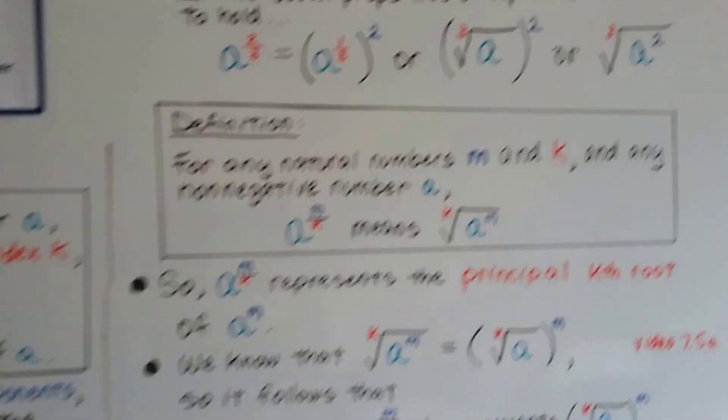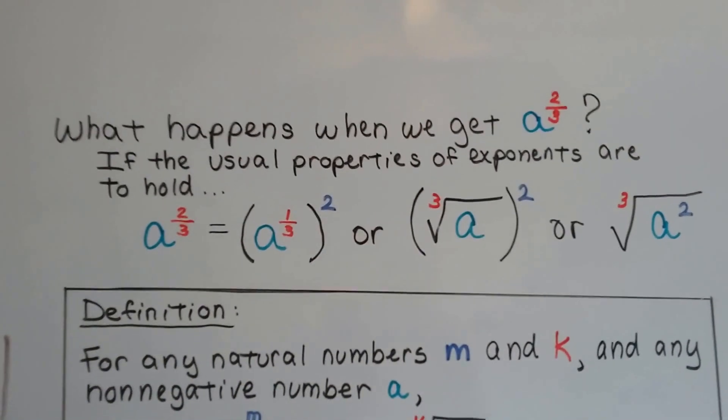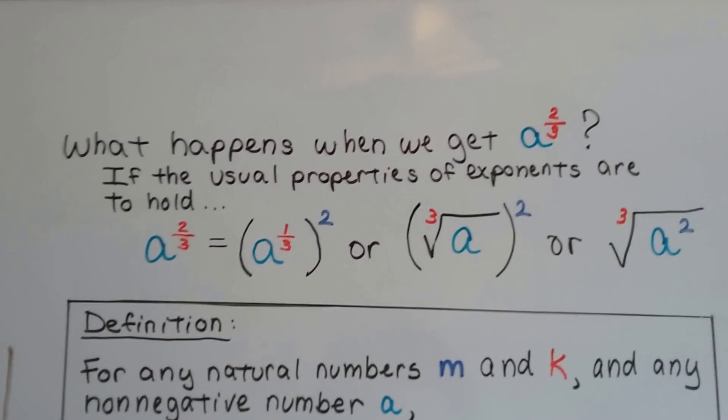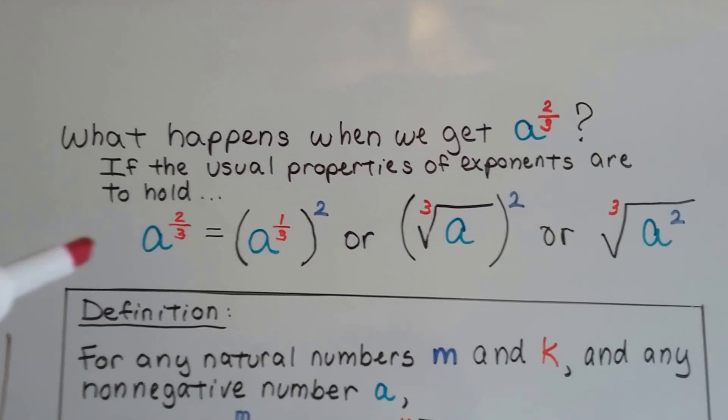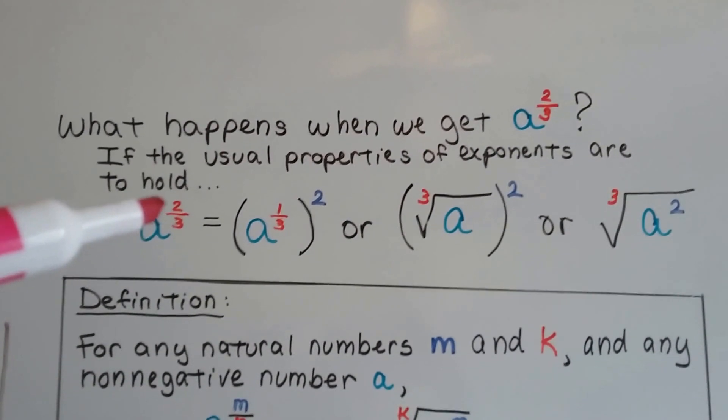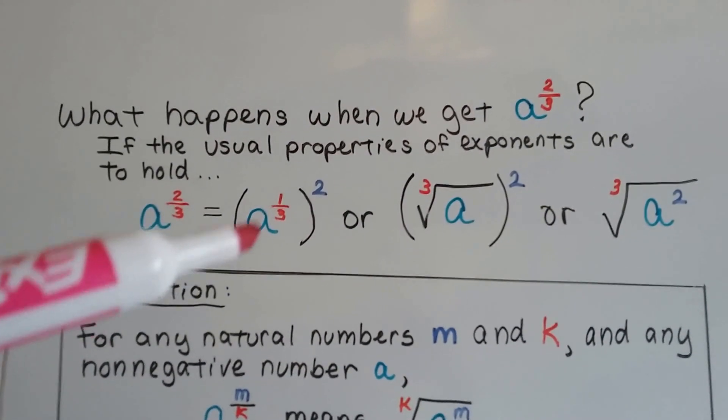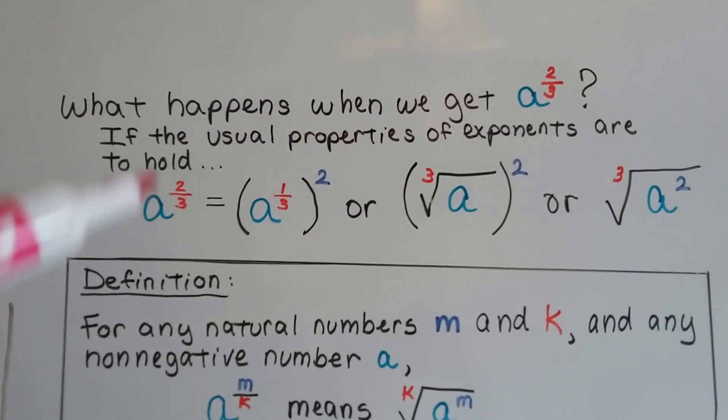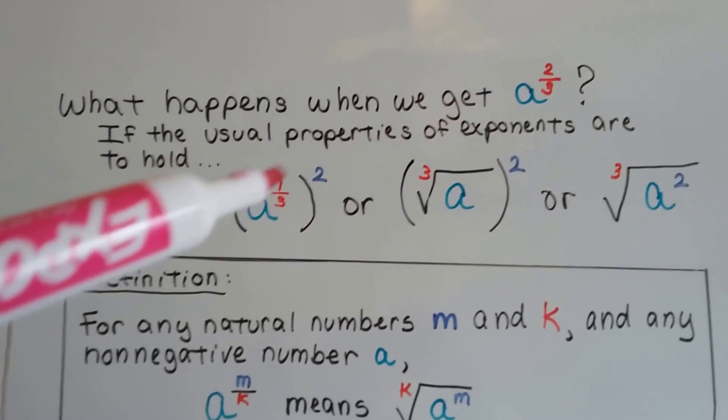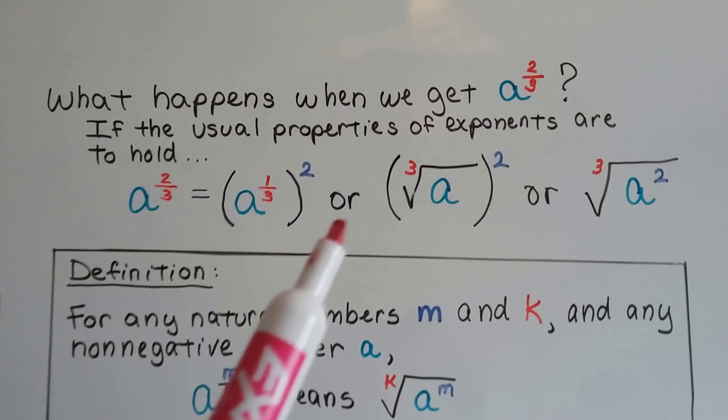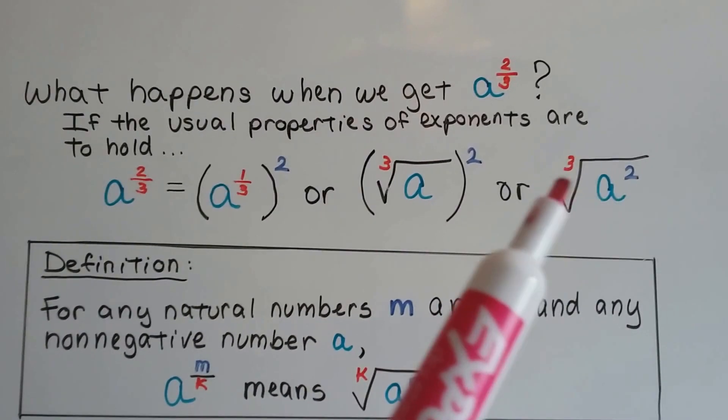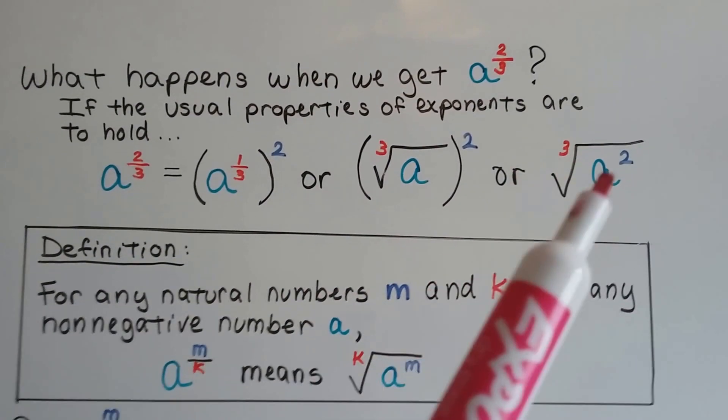So what happens when we get a to the two-third power? If the usual properties of exponents are to hold, then that means we've got a to the two-third power equals a to the one-third power squared, because we're multiplying that numerator times 2. It's the same thing as the cube root of a squared.